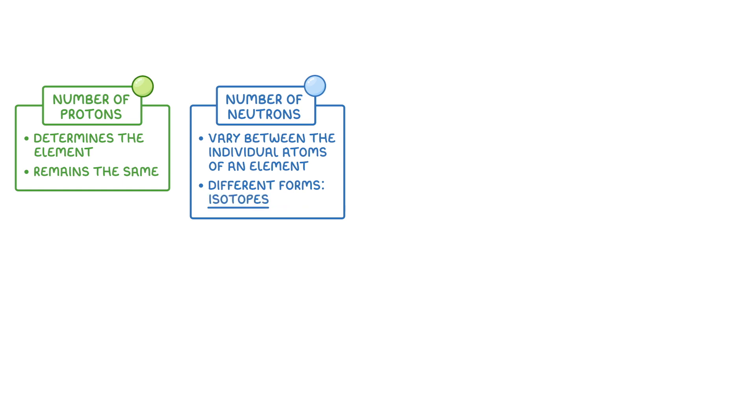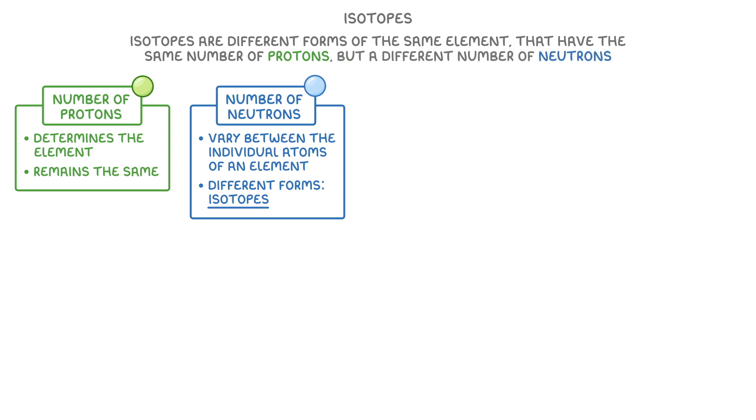The definition, which you need to remember, is isotopes are different forms of the same element that have the same number of protons but a different number of neutrons. Let's take a look at carbon to show you what we mean.